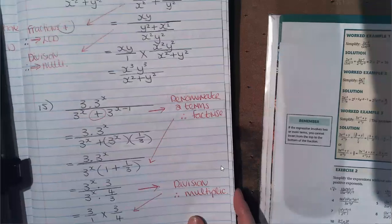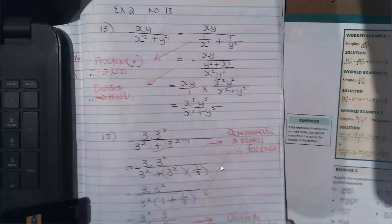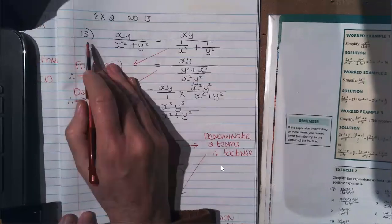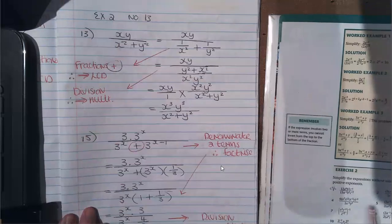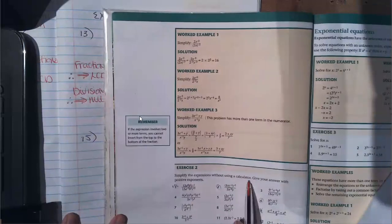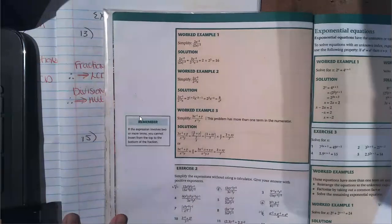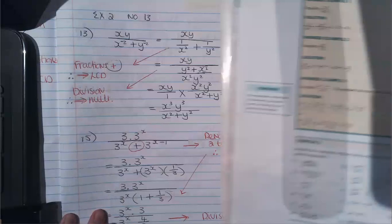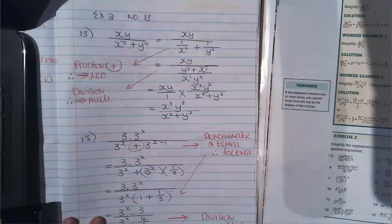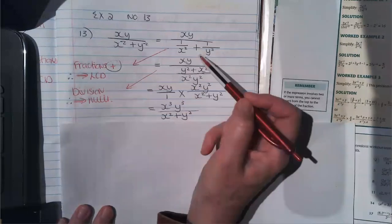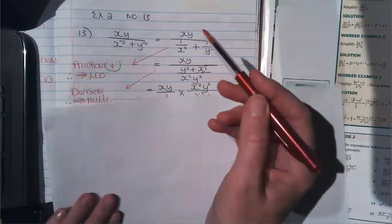Let's have a look at the other one — exercise 2 on page 30. The question is simplify without a calculator. That means you are going to use prime factors and cancel out prime factors. But in this case I don't have numbers, so I don't need to consider prime factors.